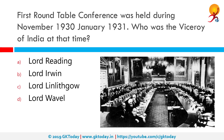The First Round Table Conference was held during November 1930 to January 1931. Who was the Viceroy of India at that time? The correct answer is Lord Irwin. In response to the inadequacy of the Simon Report, the Labour government which had come to power under Ramsay MacDonald in 1929 decided to hold a series of Round Table Conferences in London.